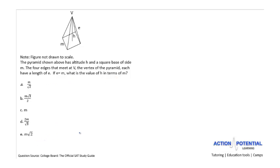There are a few things we need to notice before starting to work on this problem. The first is that the note says the figure is not drawn to scale. If this notice is not listed in an SAT question, you can assume the figure is accurate and make assumptions about the angles, lengths, and relationships between sides. However, if like in this question it says the figure is not drawn to scale, you can't make those assumptions. Whenever you see this, you should always, always rewrite the figure. It's critical to do this every single time.